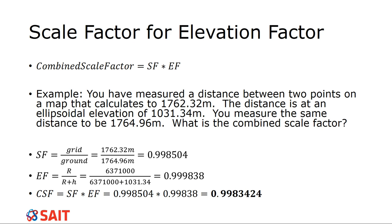Let's pause for a moment. Which measurement is considered my ground measurement? The ground measurement is the 1764.96 meters. That is the observed measurement, so that's ground. Then we have the calculated, which is the 1762.32. That is my grid measurement, the calculated measurement. We apply the grid over ground and we come up with a scale factor of 0.998504.